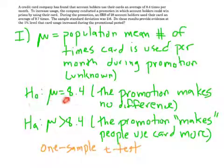Here we name our unknown parameter. Mu is the population mean number of times a card is used per month during a promotion. Our null hypothesis, we think mu is 8.4. In words, that would mean the promotion makes no difference. Our alternative hypothesis, mu is greater than 8.4. Why was it a greater than? Because we think that this promotion makes people use their cards more. And then I just named the procedure. It's a one-sample t-test.